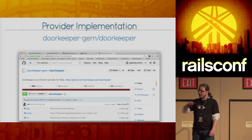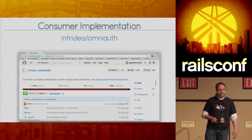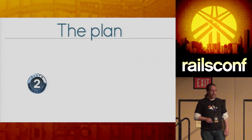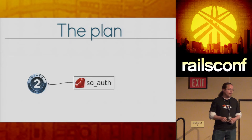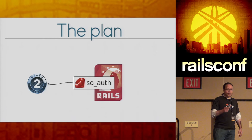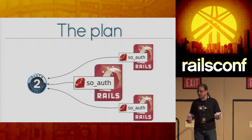For the provider implementation there's a gem called DoorKeeper — and if you happened to be in the refactoring workshop yesterday that Tutte ran, he is now the new maintainer of that gem. For consumer implementation, there's a gem from Intridia called OmniAuth that handles most of the consumer tasks. The plan is to stand up an OAuth 2 provider — possibly added to your monolith — and then create a tiny gem called SoAuth. We'll use that gem to plug into a Rails app to delegate authentication to the provider, and then it's easy to stand up other services doing the same thing.